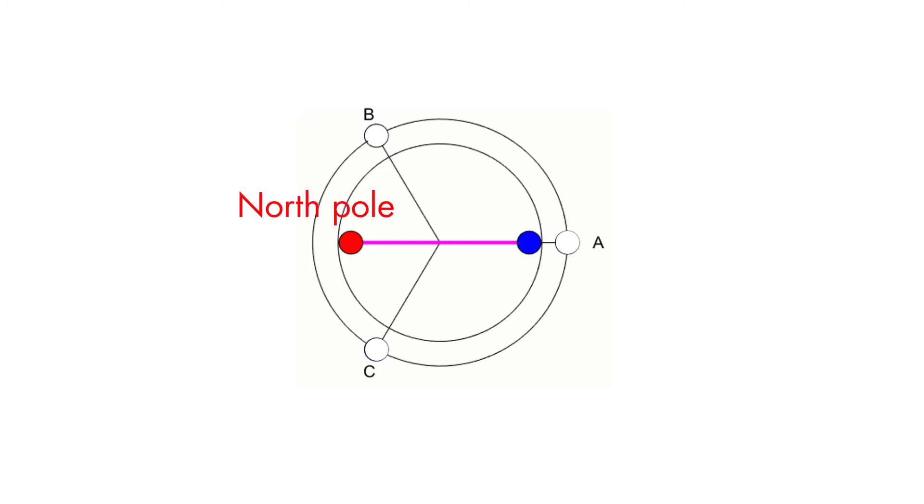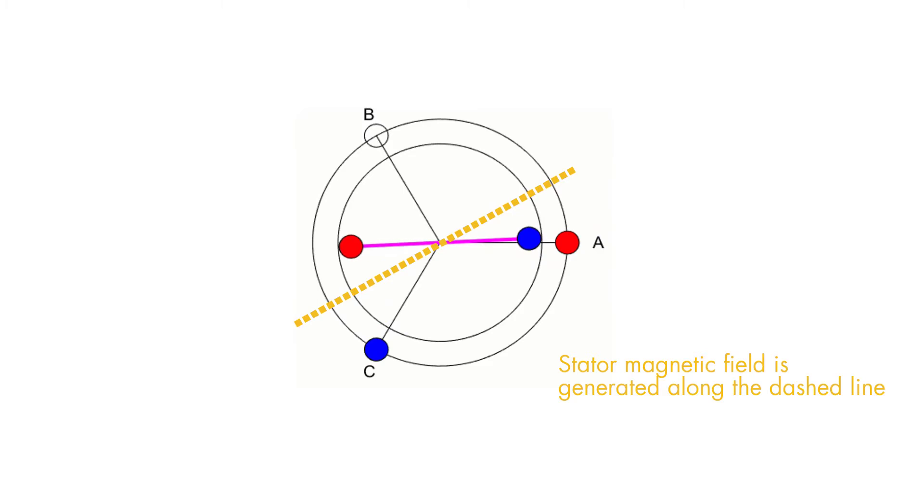The north pole of the rotor is shown with red, whereas blue represents the south pole. Currently, none of the coils is energized and the rotor is stationary. Applying voltage across two phases A and C generates a combined magnetic field along the dashed line. As a result of this, the rotor now starts to rotate to align itself with the stator magnetic field as seen in this animation.